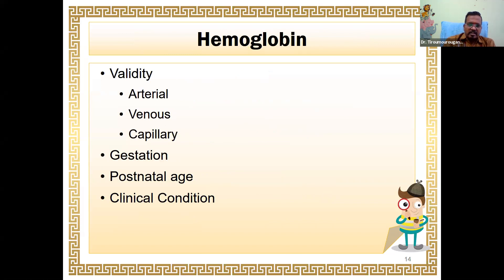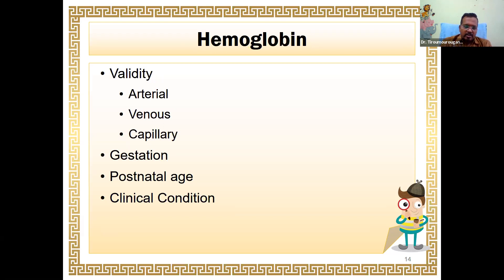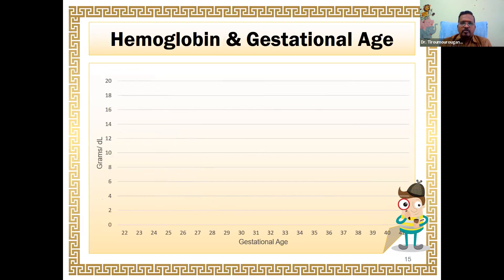When looking at hemoglobin, I need to know whether it's an arterial, venous, or capillary sample. An arterial sample is the best representation of oxygen-carrying capacity because it's from where blood goes straight to organs. Venous blood is a return — if there is peripheral cooling or edema as in sepsis with plasma leakage, venous hematocrit can be higher. Capillary hemoglobin will invariably be either low or high depending on peripheral circulation, and tissue edema can also affect the picture. So it is better not to rely on capillary hemoglobin. Of course, gestation, postnatal age, and clinical condition also have an impact.